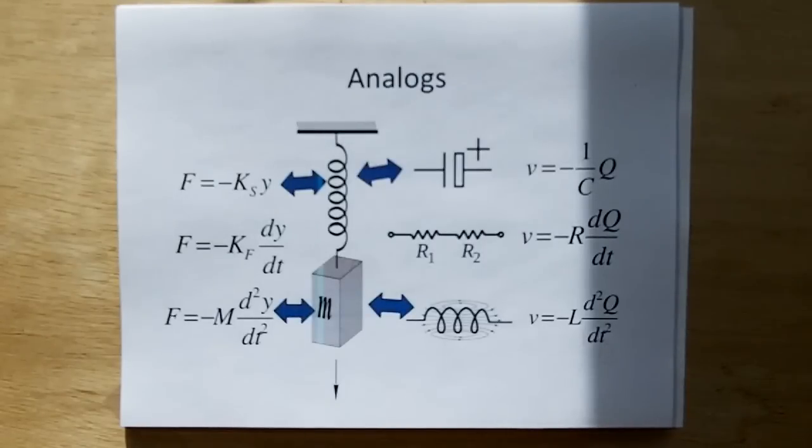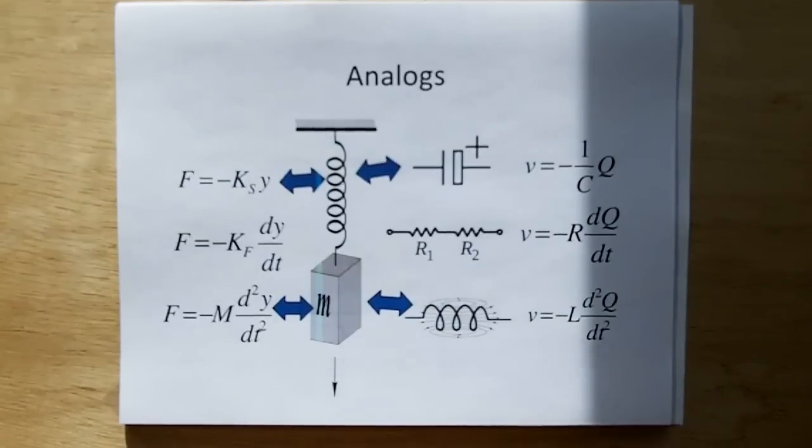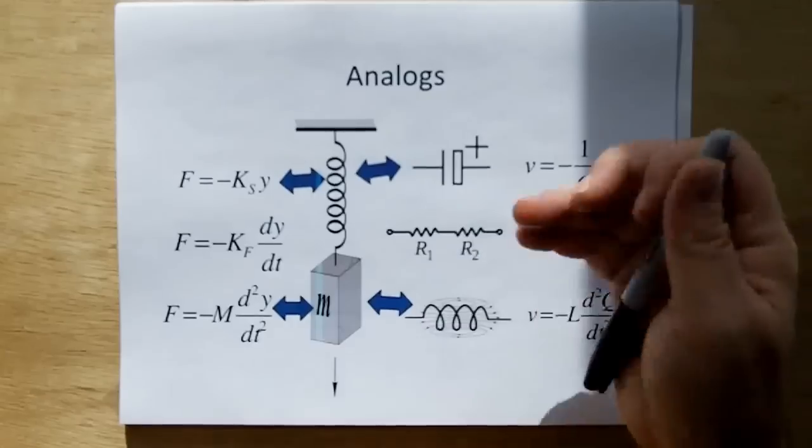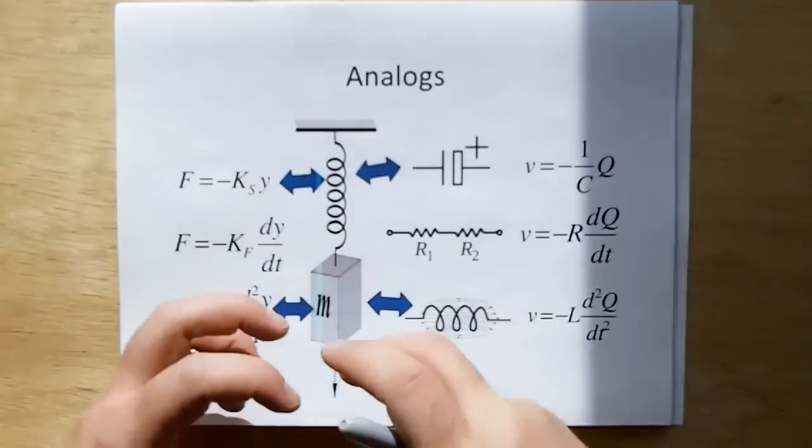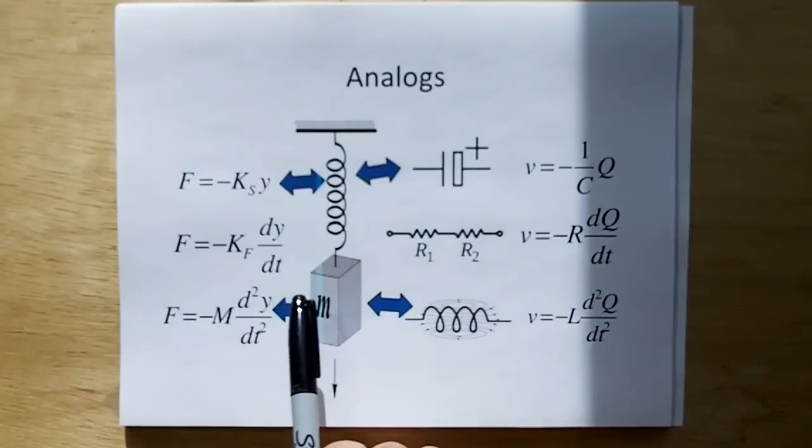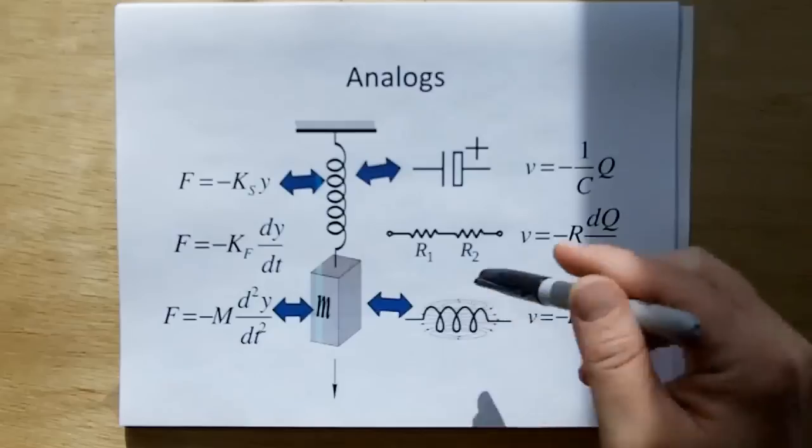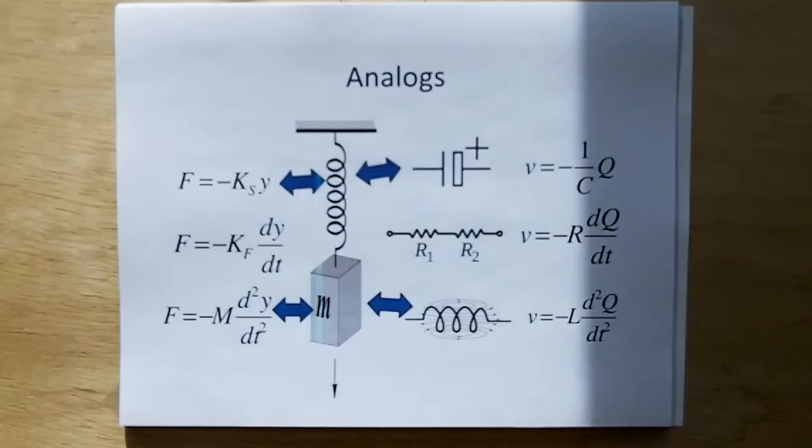And that blew me away because one thing I learned when I went to engineering school is that we have a thing called analogs. And in electronics, the analog for a spring is a capacitor. The analog for friction, in this case this model here, would be the viscosity of the mass moving through the air, which will sap the energy out of it, which is a form of friction. The electrical analog for friction is a resistor.